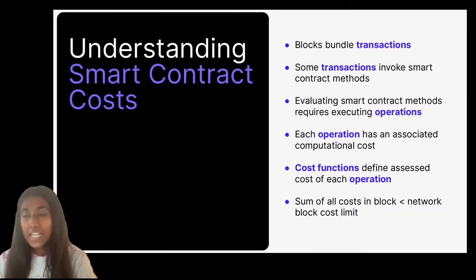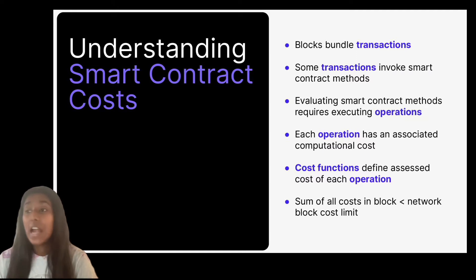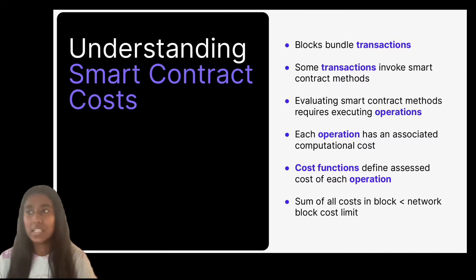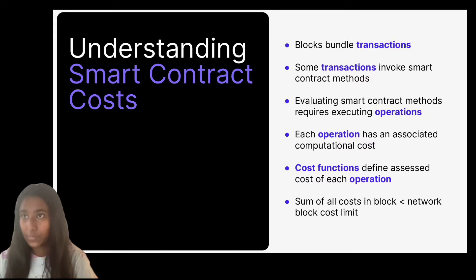In short, it's because block space is limited and computation isn't free. Let's walk through smart contract costs at a high level. Blocks bundle transactions, and some of these transactions invoke smart contract methods, and each operation has an associated computational cost.